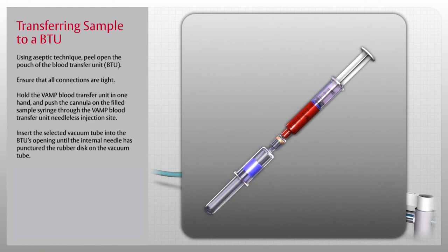Insert the selected vacuum tube into the BTU's opening until the internal needle has punctured the rubber disc on the vacuum tube.